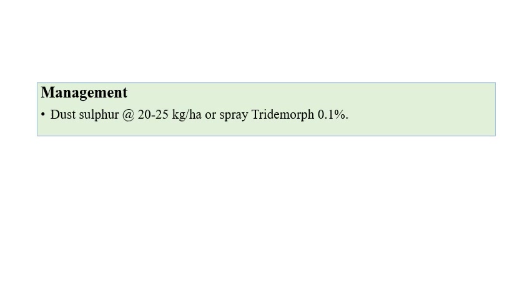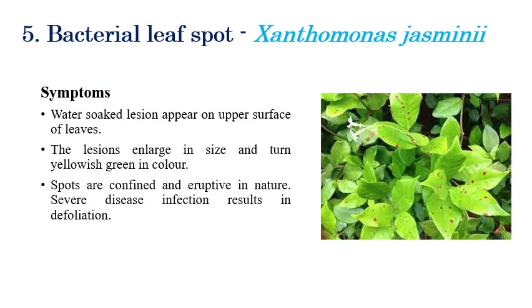For rust management, sulfur dusting at the rate of 20 to 25 kilograms per hectare, or spraying of Tridemorph at 0.1 percent, can be recommended.